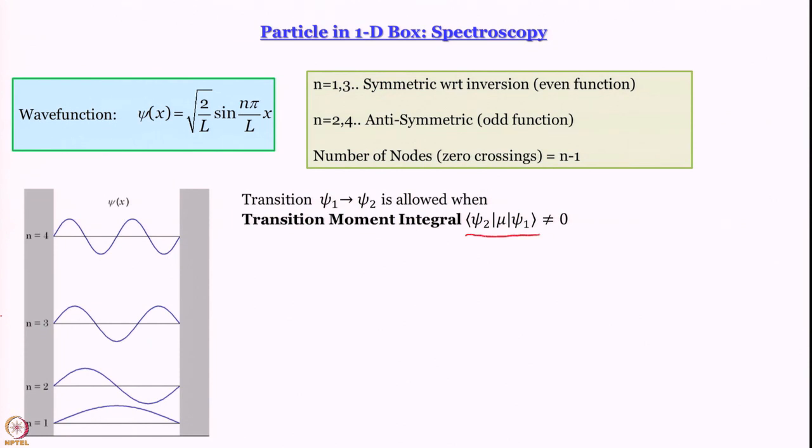Just because there are two levels does not mean a transition will necessarily take place. In spectroscopy, something very important is the selection rule, which tells us which transitions are allowed and which are not. This arises from something called the transition moment integral. The transition moment integral is the integral of psi_2 times mu times psi_1, and the condition is that this transition moment integral must be non-zero.